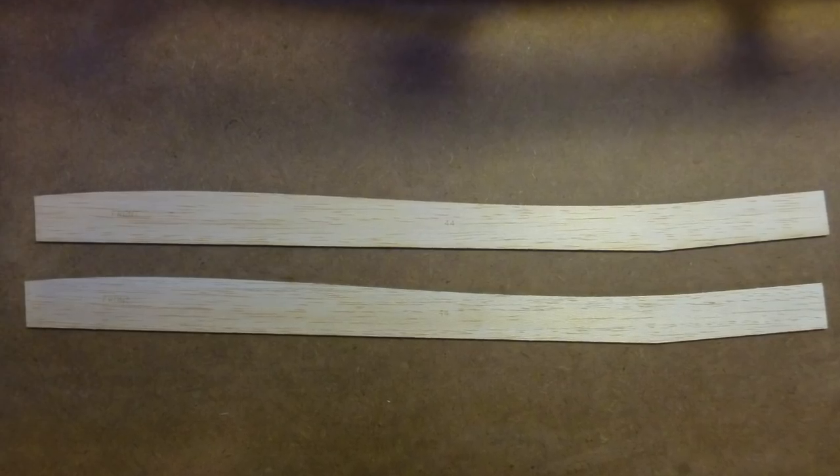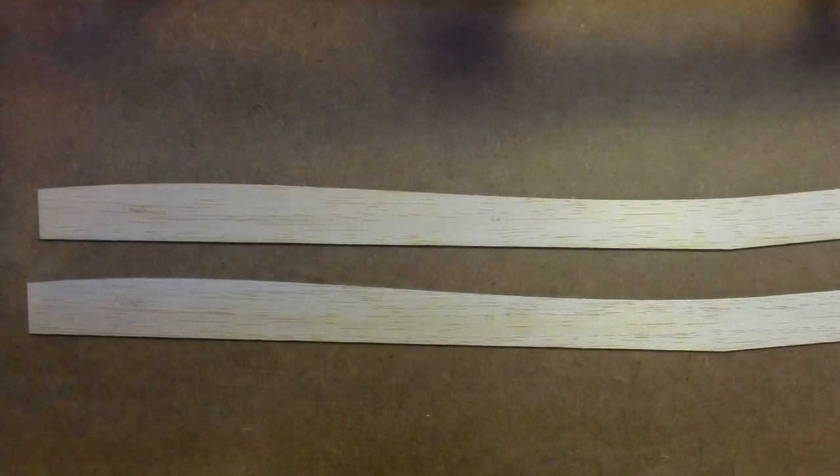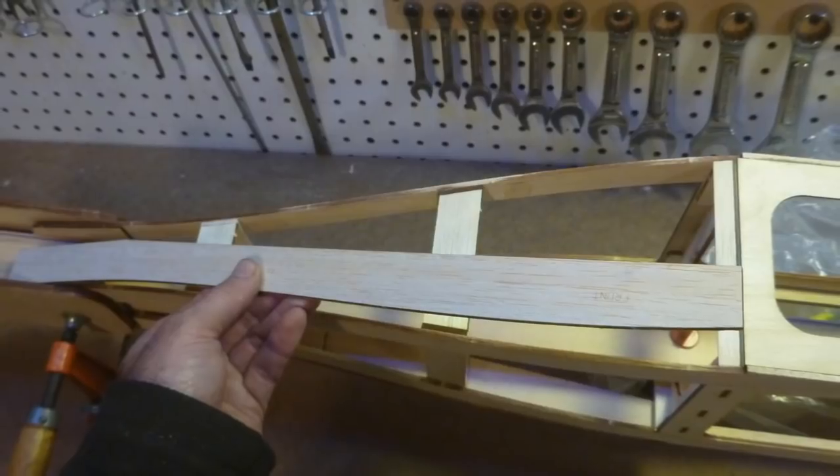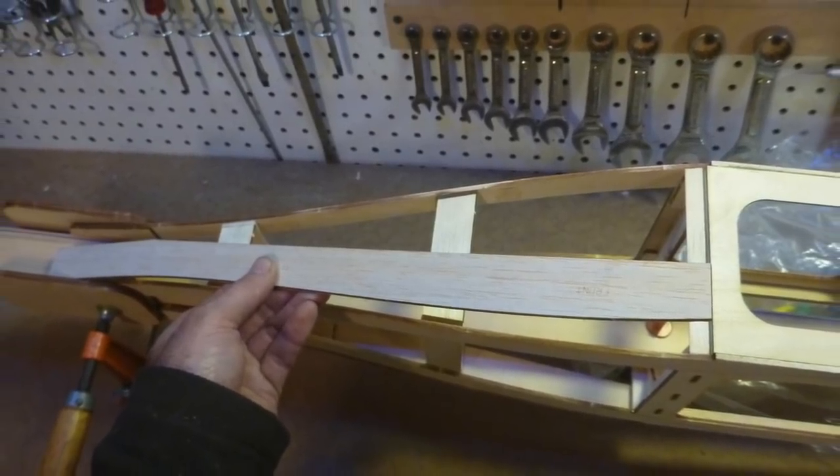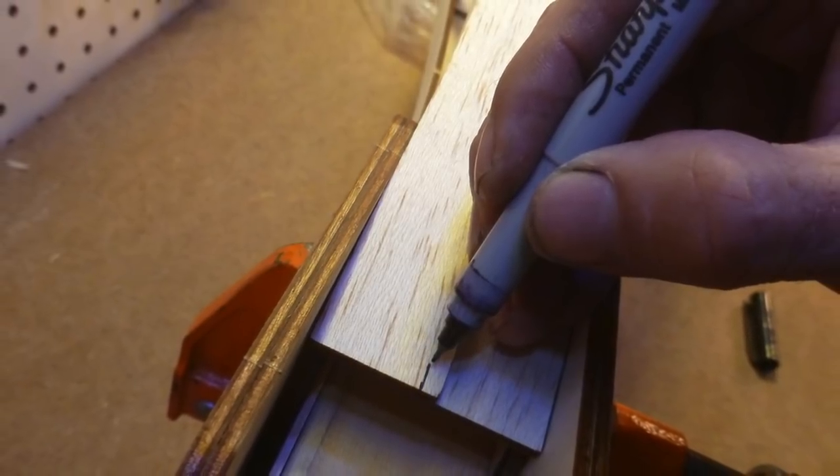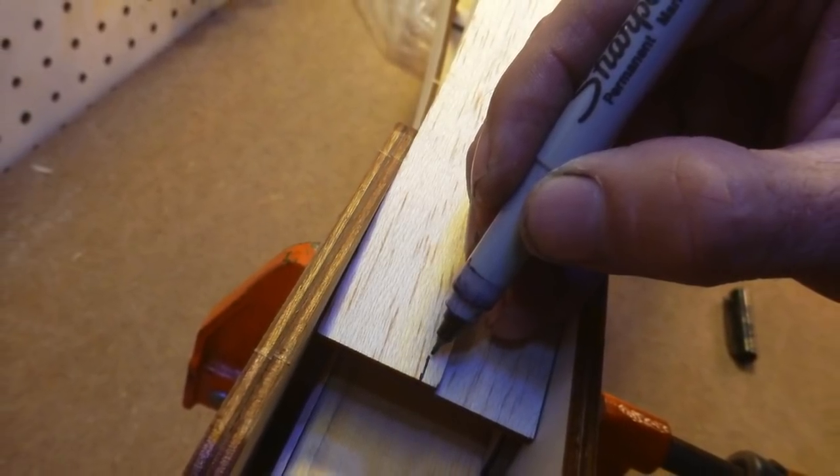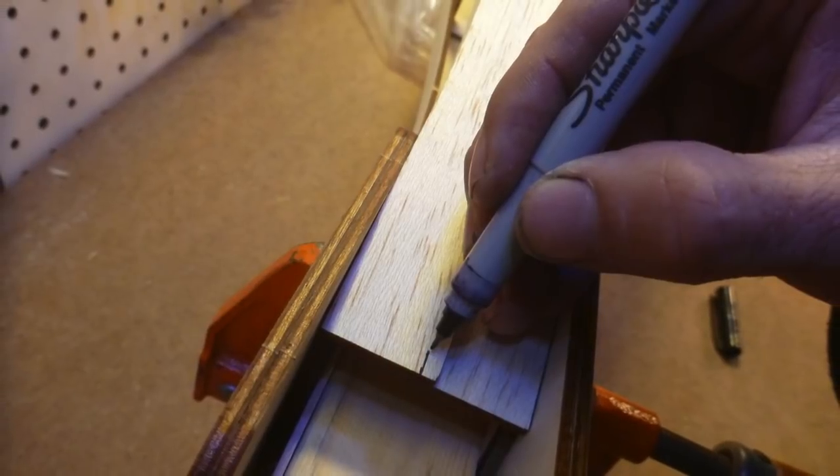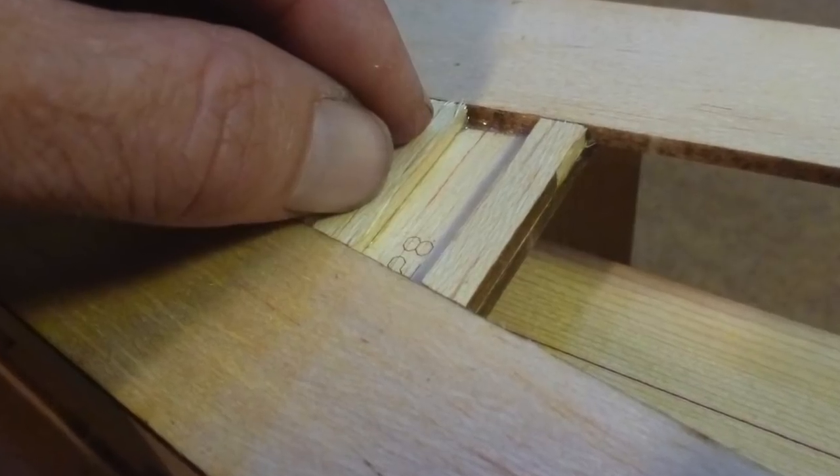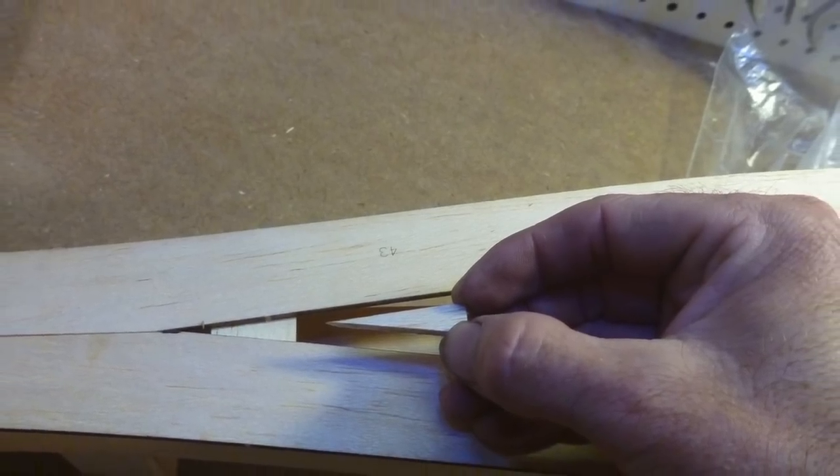Now, locate parts number 44, paying attention to the end marked front. Fit and glue them to the bottom of the fuselage, taking a bit more care with the joint between them, as this will be part of the finished aircraft. It's optional, but we like to cut some pieces of scrap to achieve better adhesion of the covering material.